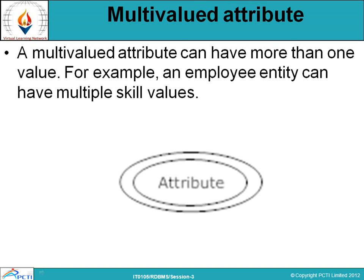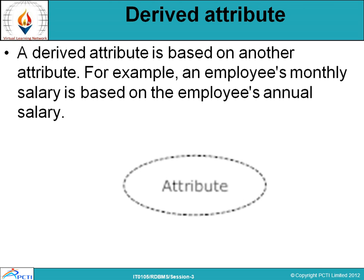Next is the multi-valued attribute. A multi-valued attribute can have more than one value. For example, an employee entity can have multiple skill values. This attribute is represented as a double oval. Next is the derived attribute, represented by a dotted oval. A derived attribute is based on another attribute. For example, an employee's monthly salary is based on the employee's annual salary, or if you know the date of birth you can calculate the age — that is a derived attribute.